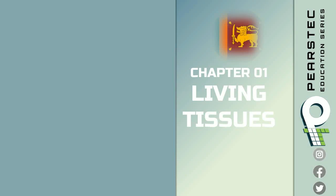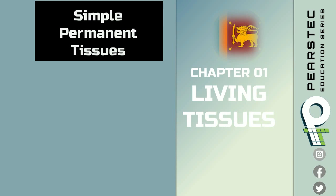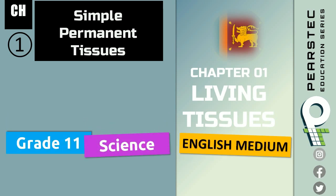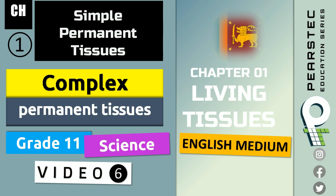Welcome, one more time. We are in another beautiful session - Chapter 1, Living Tissues. We have been speaking about simple permanent tissue, and this is Grade 11 Science, English medium. Today we are going to talk about complex permanent tissues. We already talked about the rest, and finally in plant tissue we are going to discuss about complex permanent tissues in this video, number six.